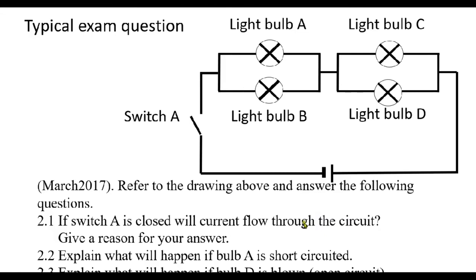Let's look at a typical exam question from March 2017. Referring to the drawing above, question 2.1 asks: if switch A is closed, will current flow through the circuit? When we close switch A, all the light bulbs come on. Closing switch A creates a closed loop, which means we have a closed circuit. Whenever we have a closed circuit, current will flow, travel through whatever components are connected, and return to its source. Therefore, all the light bulbs will work.